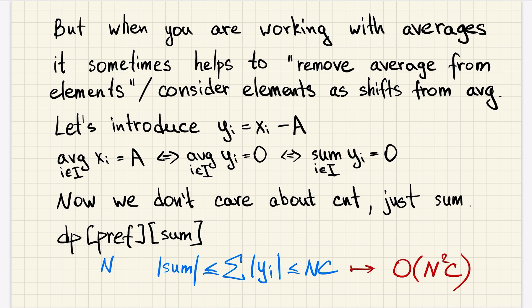So we saved one N multiplier in complexity. And this is a very simple problem to illustrate this nice idea that when you're working with averages, you should try to make the average to be zero because it is simpler to work with sums than with averages.